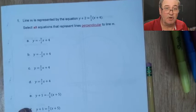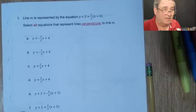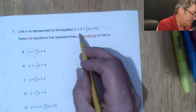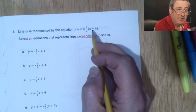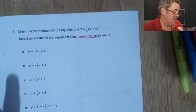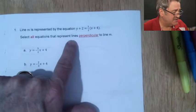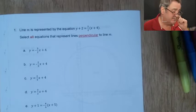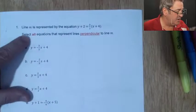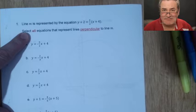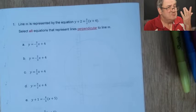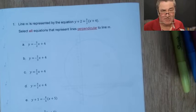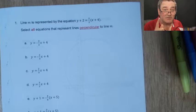With no further ado, let's get started. Line m is represented by the equation y + 2 = (3/2)(x + 4). Select all equations that represent lines perpendicular — I've put that in red and underlined it because that's the important word. Sometimes we miss 'perpendicular.' Also, remember: any time you see 'all' on a test, you can almost count on the fact that there's going to be more than one answer.